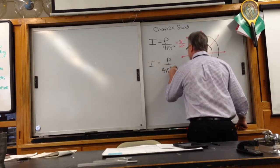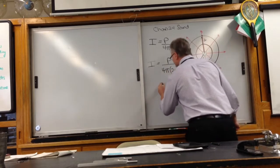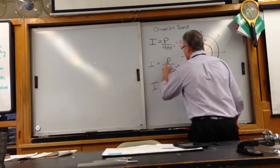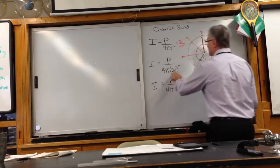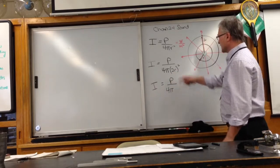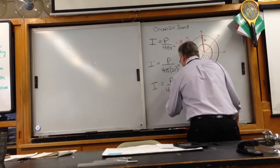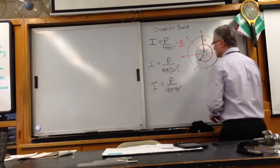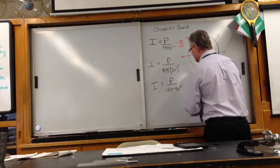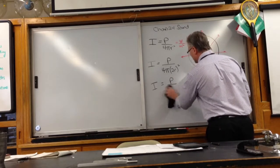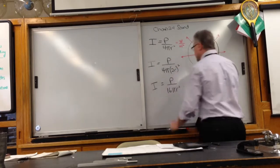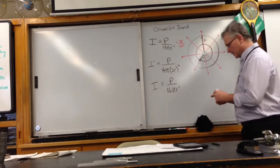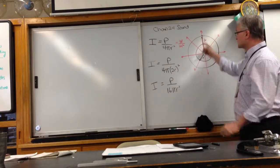So if we go ahead and figure out I now, we've got the power divided by 4π, and then we end up with 2 squared, which is 4, times R squared. Now 4 times 4 is 16, so we end up with 16πR². So what is the intensity of the sound now that we're standing twice as far?